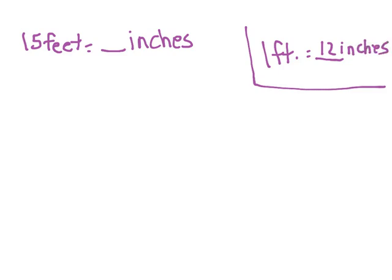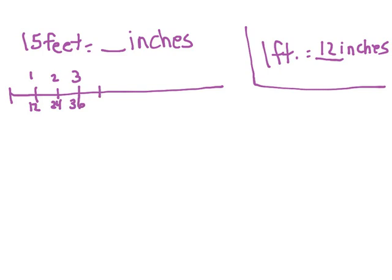There are a couple of ways to solve this problem. First, you could make a number line. It would look something like this. One foot is equal to 12 inches. Two feet would be another 12 inches — that would be 24 inches. Three feet, you add another 12 to 24 inches and you have 36 inches. Four feet would be 48 inches, and so on until you got to 15 feet, which would equal 180 inches.